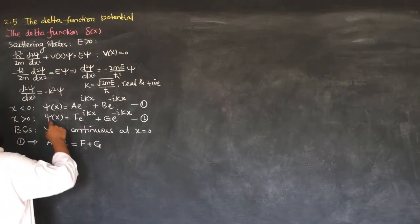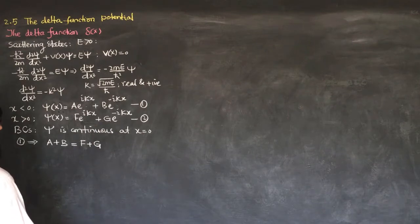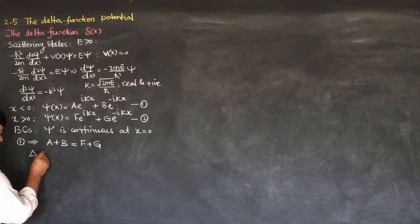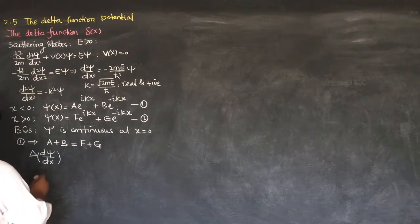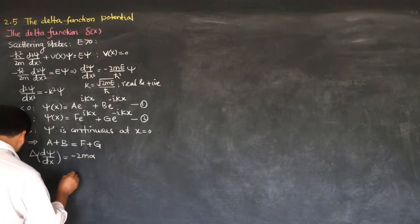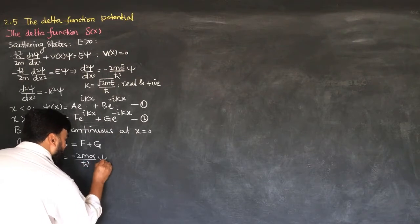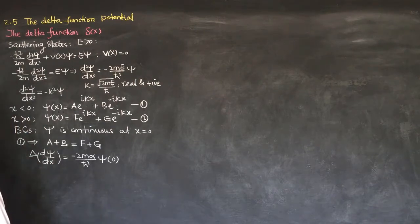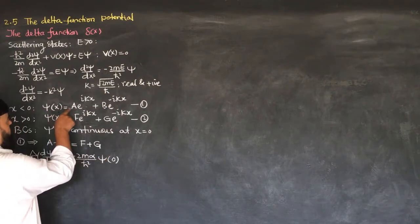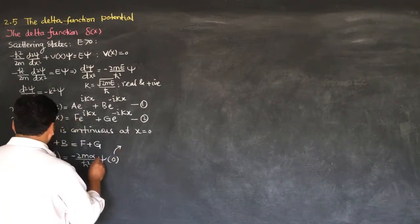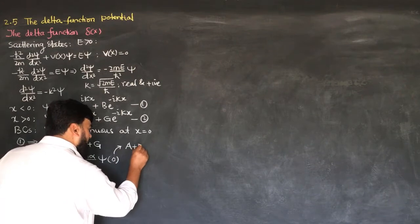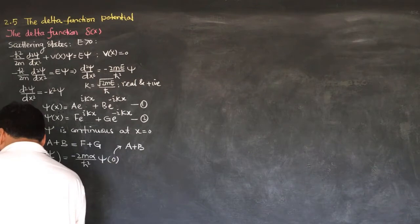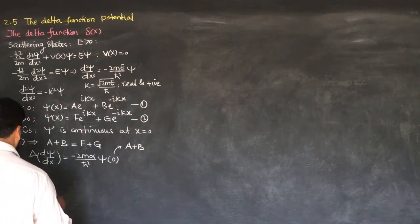For the second boundary condition, dψ/dx is continuous on the boundary. As we derived from the Schrödinger wave equation, the discontinuity in dψ/dx equals -2mα/ℏ² times ψ(0). We can apply this result. From equation 1, ψ(0) = A + B.